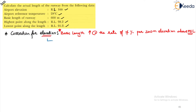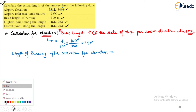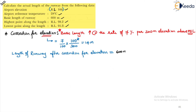Let's complete the calculation. This will be equal to 7% — that is 7/100 — of the airport elevation divided by 300 meters. The airport elevation given is 100. So: (7/100) × (100/300) = 14 meters. Therefore, the length of runway after correction for elevation will be the basic length 600 meters plus the correction of 14 meters, giving us 614 meters.